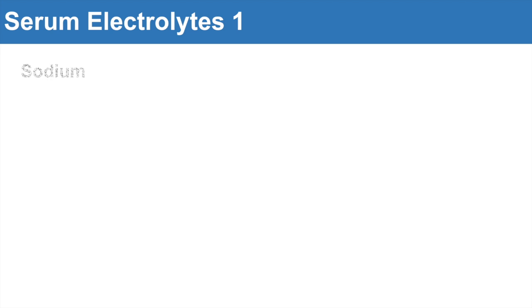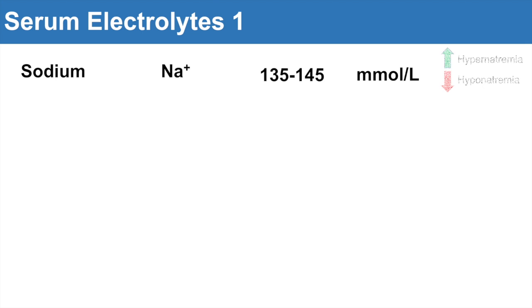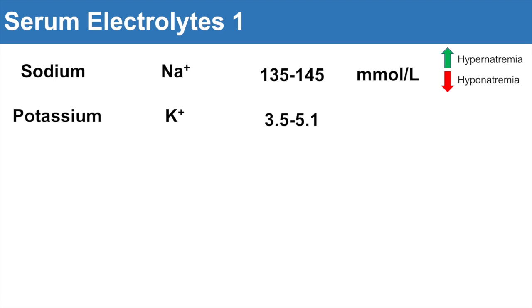Some serum electrolytes you might see on an electrolyte screening panel include sodium, a very important one. The range is about 135 to 145 millimoles per liter — a pretty consistent range among many different populations. Anything higher would be hypernatremia; anything lower would be hyponatremia. Another very important one is potassium, with a range of about 3.5 to 5.1 millimoles per liter. Anything higher would be hyperkalemia; anything lower would be hypokalemia.